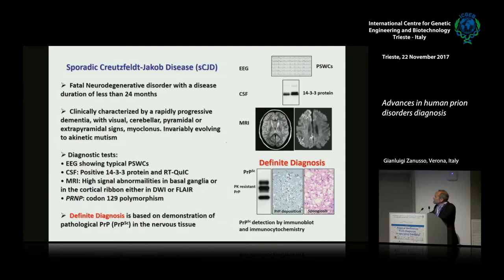In particular, the EEG shows the periodic sharp-wave complex, the positivity of 14-3-3 protein, and positivity at MRI in the cortical ribbon or in the basal ganglia. However, the definite diagnosis is still based on neuropathology.